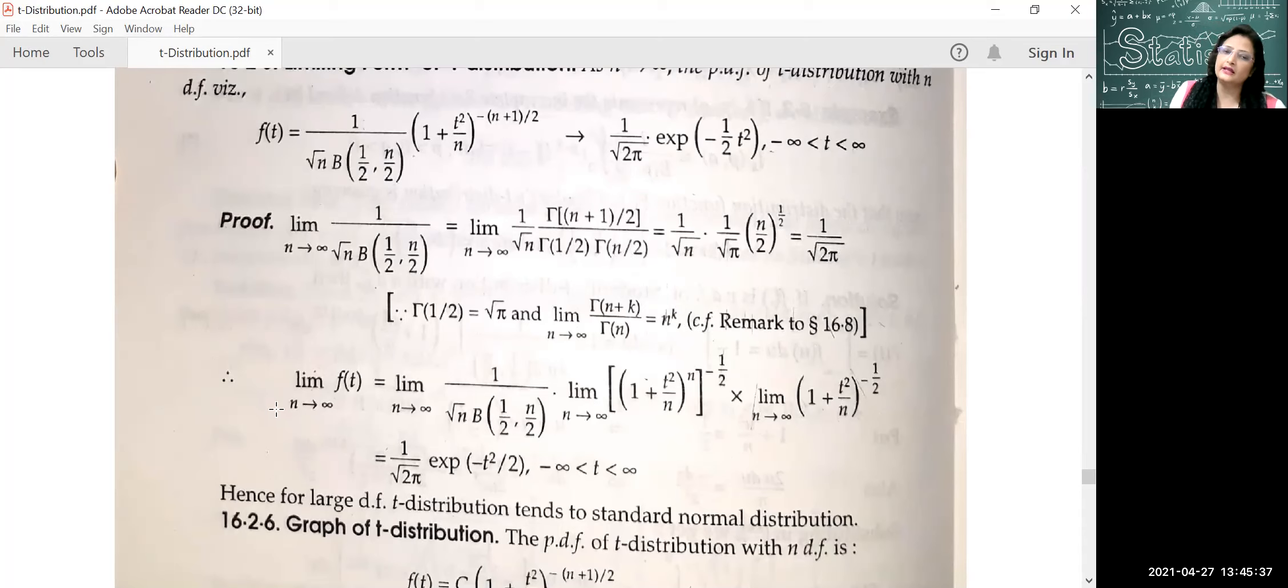Now we will find the limiting value of the function which is in terms of t. This is limit n tends to infinity, 1 plus t-square. You can see this - we have taken it up first. We have converted it in this form. Now we have written it in two parts.